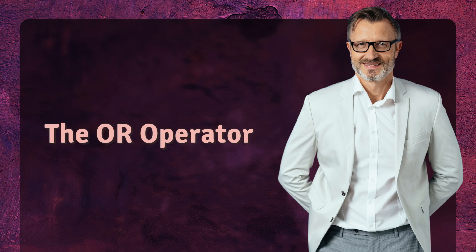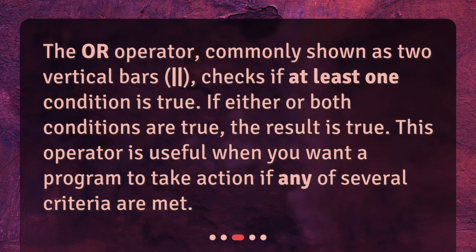The OR operator, commonly shown as two vertical bars, checks if at least one condition is true. If either or both conditions are true, the result is true. This operator is useful when you want a program to take action if any of several criteria are met.